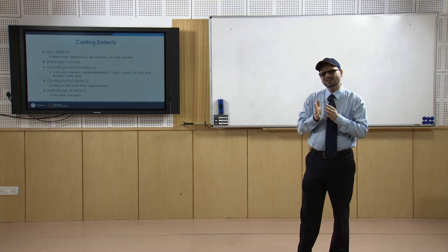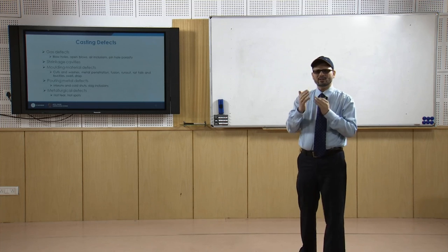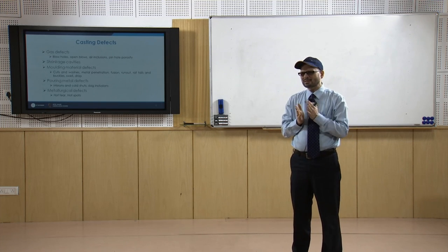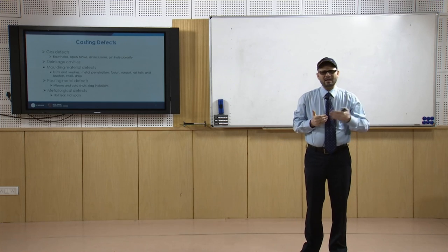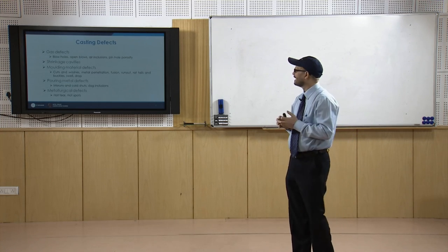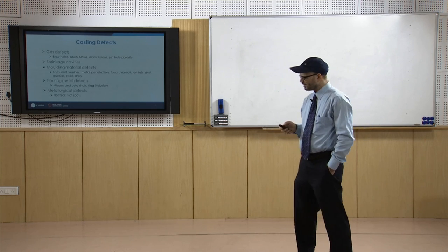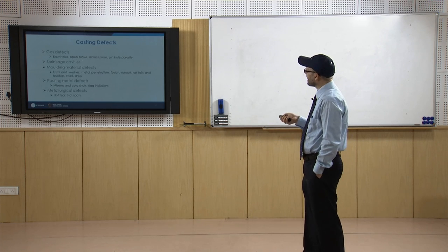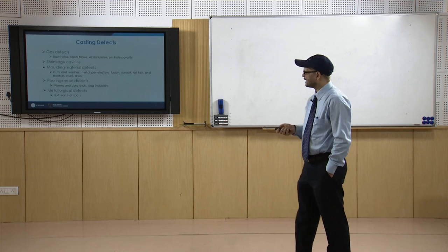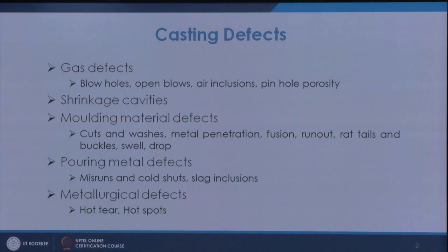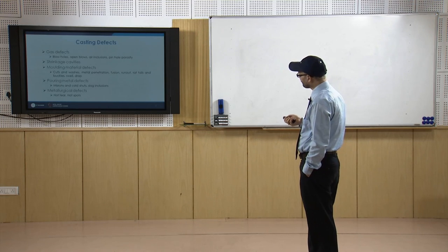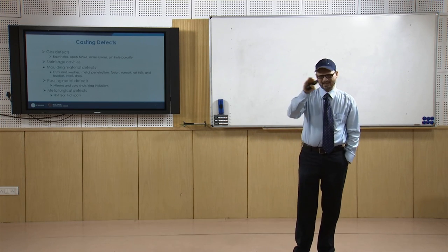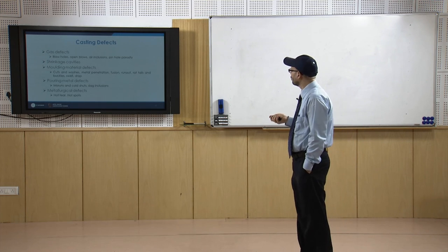These gases need to go out of the mould to ensure a defect-free casting as far as gaseous defects are concerned. If these gases are not able to go out and they remain inside the casting, then they are known as blow holes — gaseous cavities found inside the casting. If they are on the surface of the casting and open to atmosphere, then they are known as open blows.